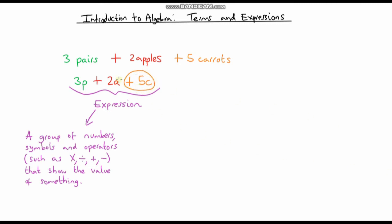This term here is +5c—that would be one term of our expression. Another term would be +2a, or the two apples. The final part of our expression is 3p. That does say +3p in front, but we don't see it because we just don't write it down. We just imply that it's +3p. So in this expression, we've got three terms.